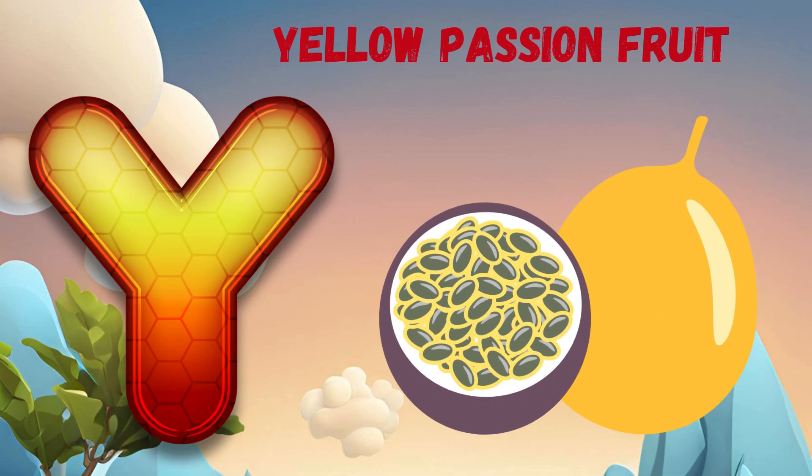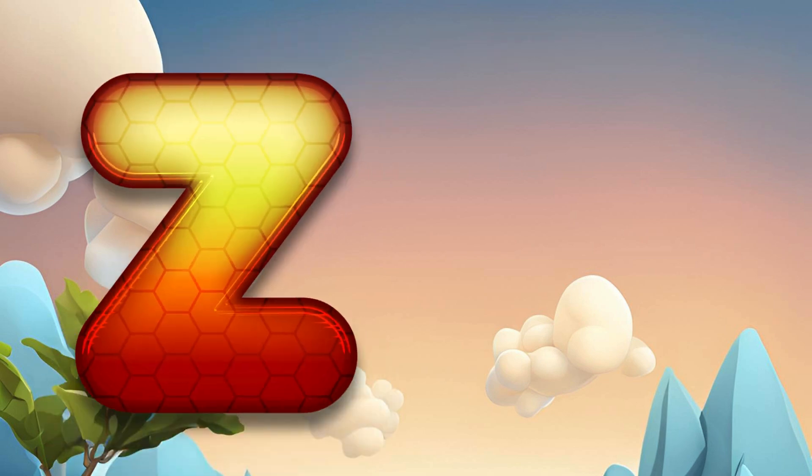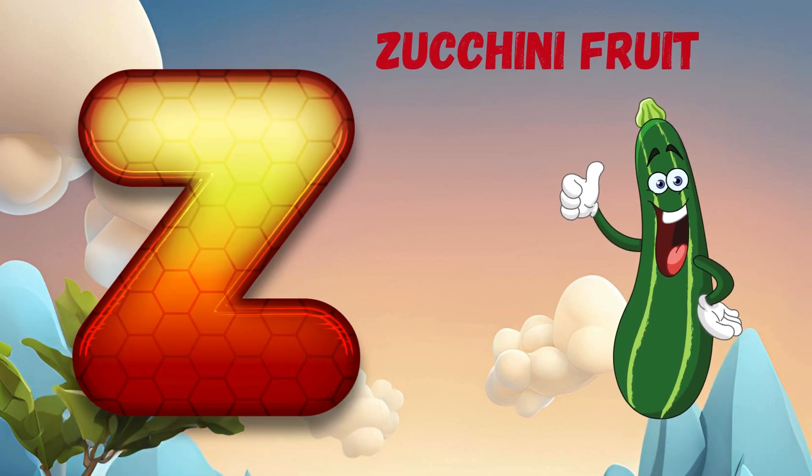Y is for yellow passion fruit. Ya, ya, yellow passion fruit. Z is for zucchini fruit. Z, z, zucchini fruit.